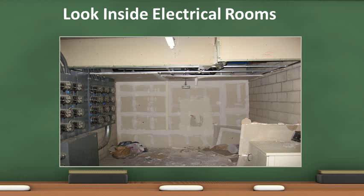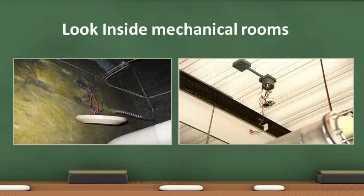Look in electrical rooms for detectors and other initiating devices. The smoke detector shown is detached from the ceiling and the fire-rated drywall is not intact. Mechanical rooms should be inspected for initiating devices as well as other code violations. The detectors in this photo are damaged.